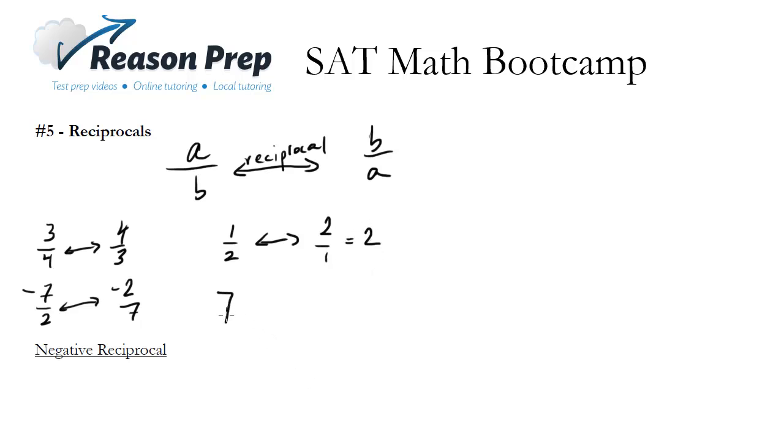So you might say, well what about 7? What's the reciprocal of that? You can imagine it's the same thing as 7 over 1, which then becomes an easy flip to 1 seventh.